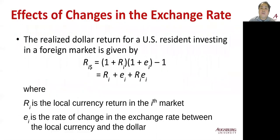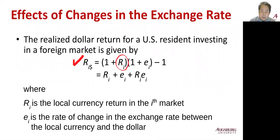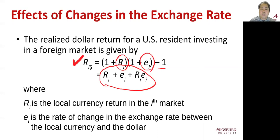There's a simple formula we can remember. The return for the US dollar resident investing abroad equals (1 + RI) times (1 + EI) minus one, where RI is the local currency return and EI is the rate of change in the exchange rate between the local currency and the dollar. This simplifies to RI plus EI plus RI times EI.